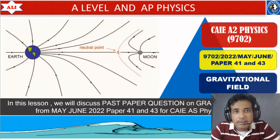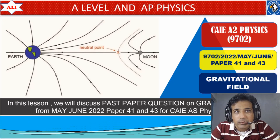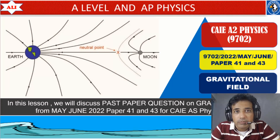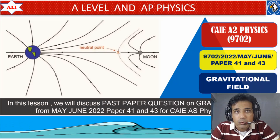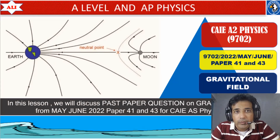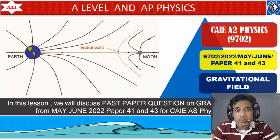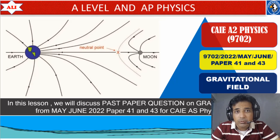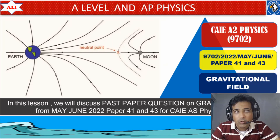Welcome to A Level and AP Physics. In today's lesson, we will discuss a past paper question on Gravitational Field from May June 2022, Paper 4, Variant 1. We will discuss this question in detail so you can have a clear understanding of this topic.